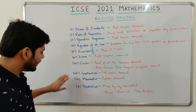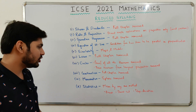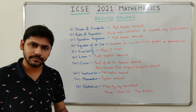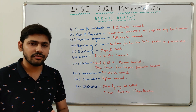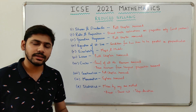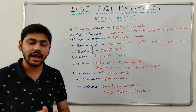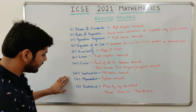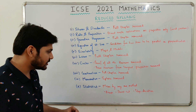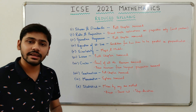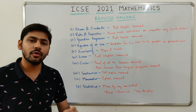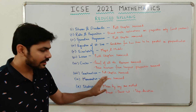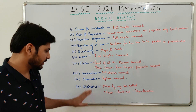Next, Construction — the entire section has been removed, including tangents, circumcircle and incircle of a triangle, and circumcircle and incircle of a hexagon. Next, Mensuration — the section on Sphere has been removed, meaning you will only have Cylinder and Cone.